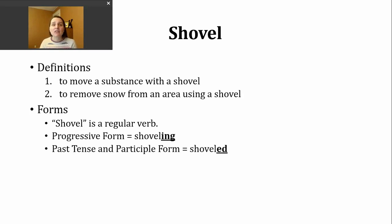You should know that shovel is a regular verb. To make the progressive tense, all I need to do is add -ing to form shoveling. The past tense and participle forms of this verb are made by just adding -ed. The base verb shovel ends in this voiced L sound, so our -ed is going to make a D sound: shoveled.